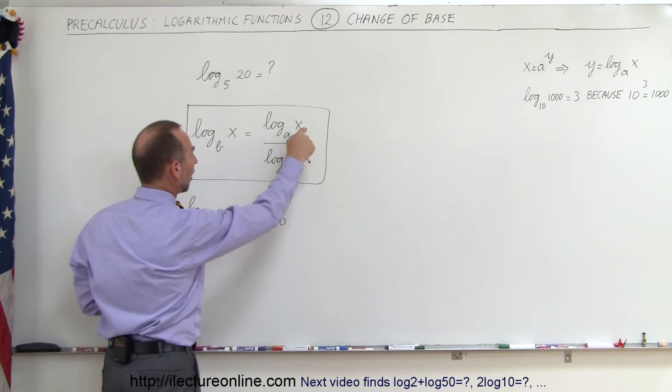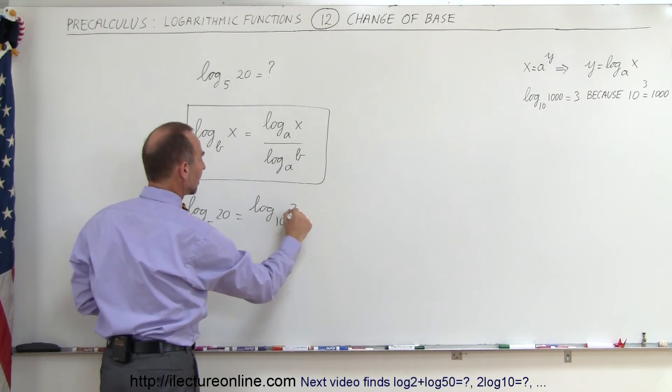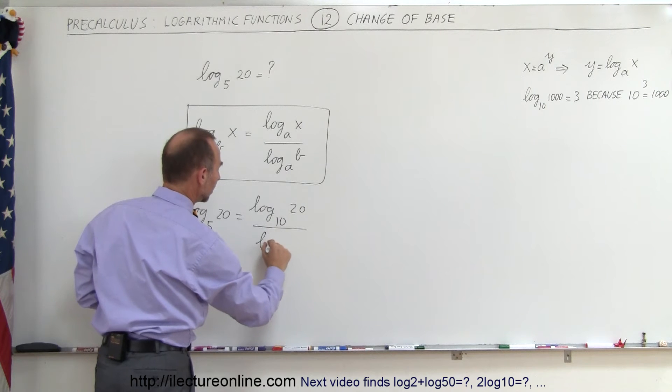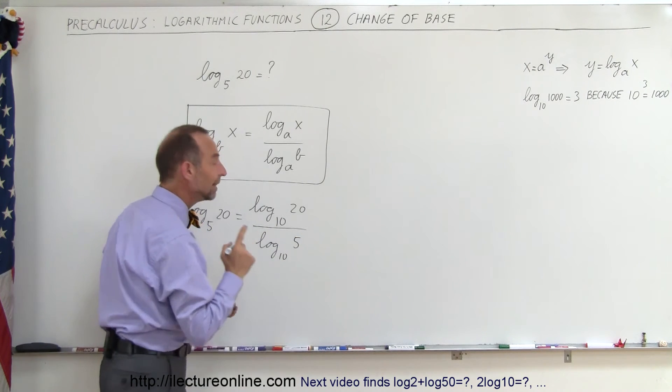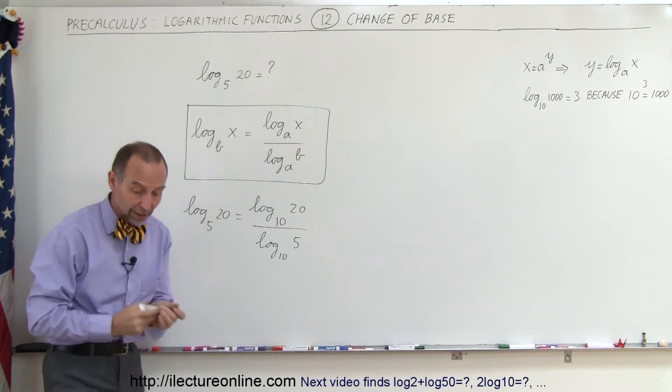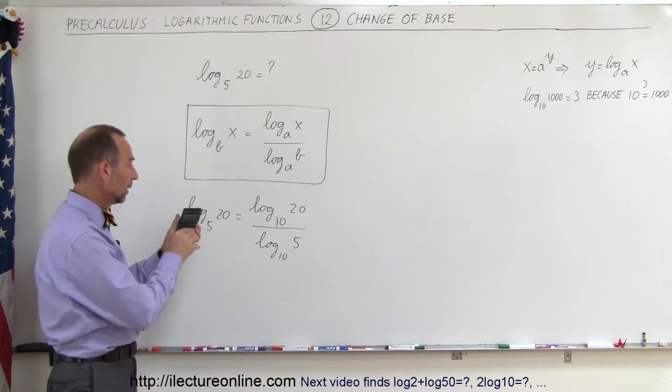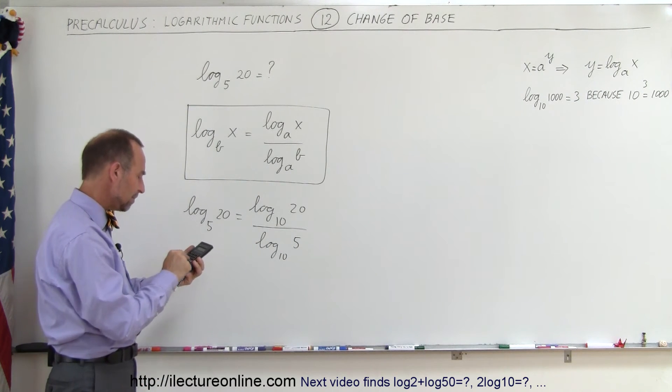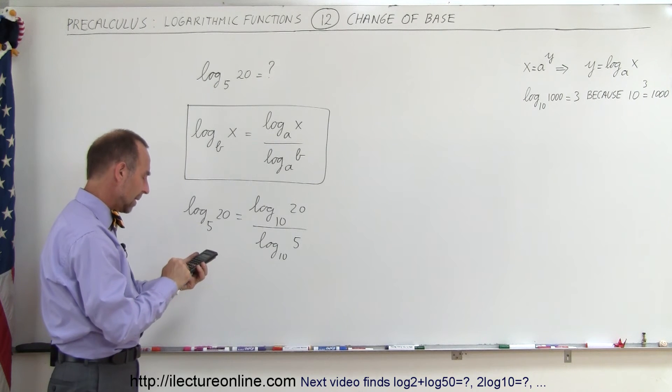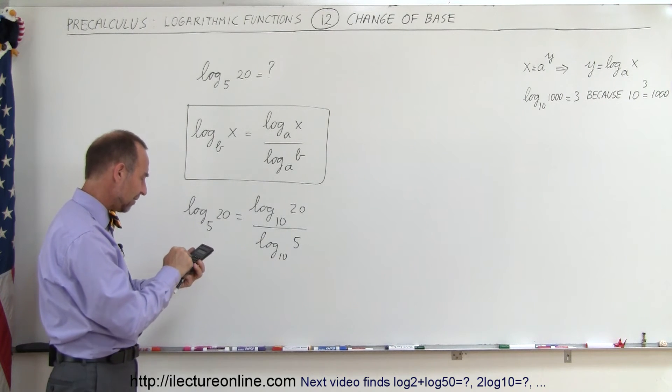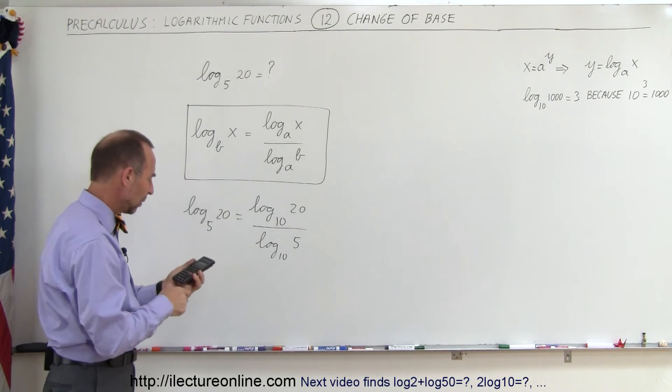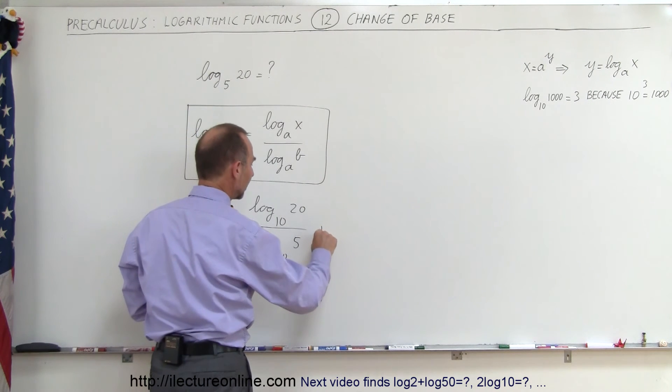So log of base 10 of that number X, which is 20, divided by the log of base 10 of the base, which was 5. And that we can solve because with a calculator we can take the log of 20 divided by the log of 5 and that will be the number 1.86.